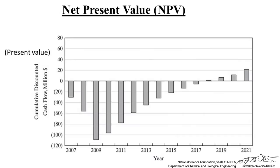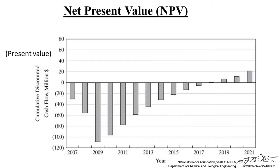We can also plot cumulative discounted cash flow in millions of dollars as a function of year. Even though positive cash flows occur from year four onward, the cumulative discounted cash flow — because it must account for all prior negative years — doesn't actually turn profitable until around 2018. The net present value compares the venture's value to what you could earn investing at 15%.